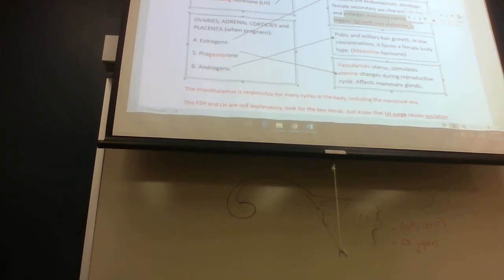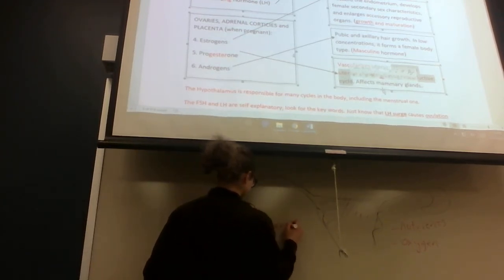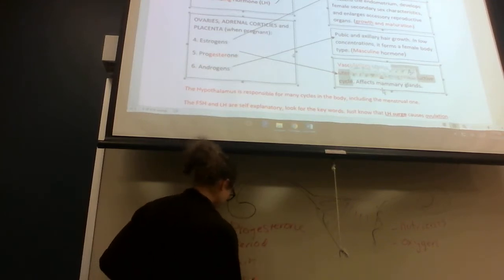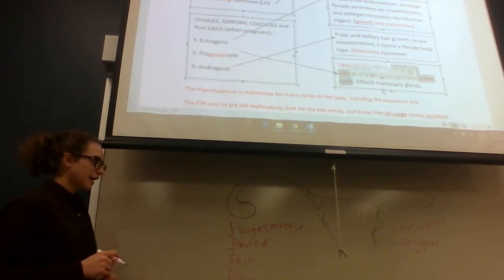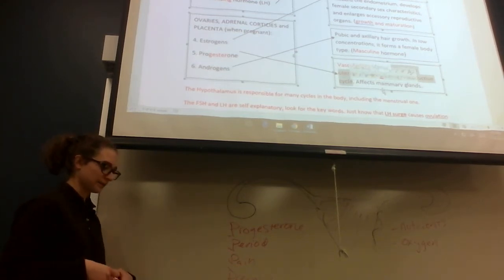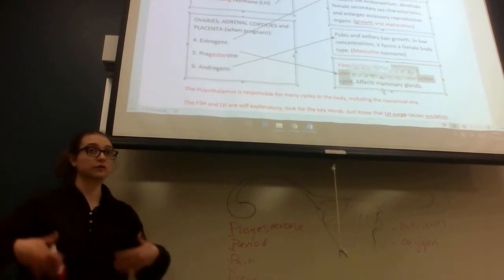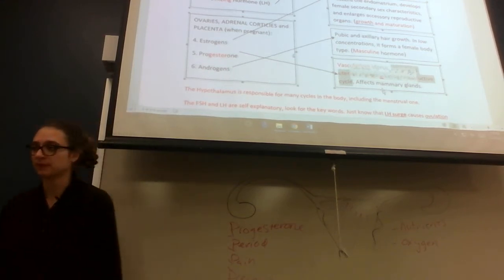Progesterone vascularizes, increases blood flow. Progesterone stimulates uterine changes during the reproductive cycle, like when you have your period. With progesterone, I like to think progesterone, period, pain, pregnancy. All Ps. Progesterone is responsible for all these things. With pregnancy, some women may not be able to carry a child because they don't produce enough progesterone. If you don't have enough progesterone, you don't have enough blood flow. And if you don't have enough blood flow, then that child won't be carried.